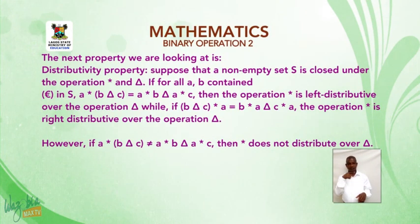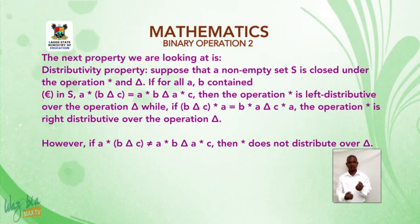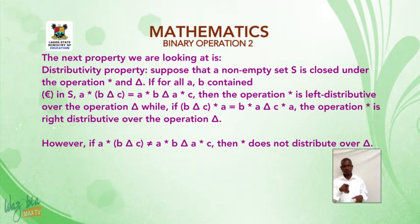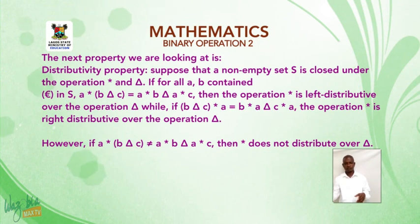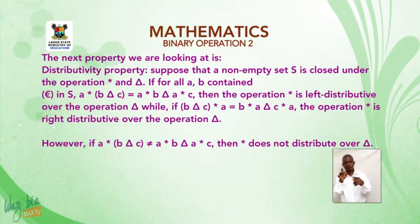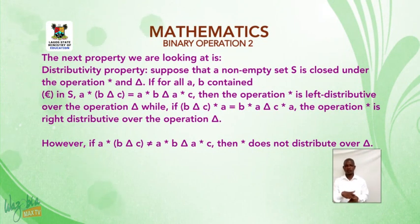The next property we are looking at is distributivity property. Suppose that a non-empty set S is closed under the operations star and delta. If for all a, b, c contained in S, a★(b Δ c) = (a★b) Δ (a★c), then the operation star is left distributive over the operation delta.